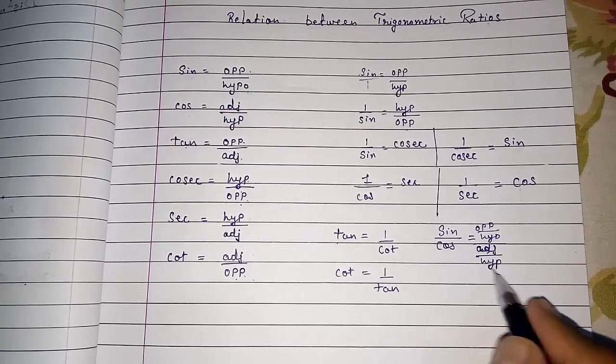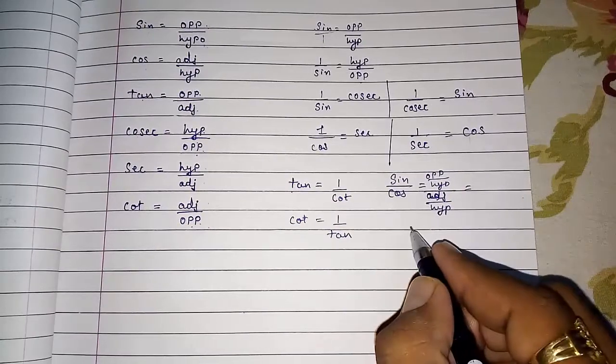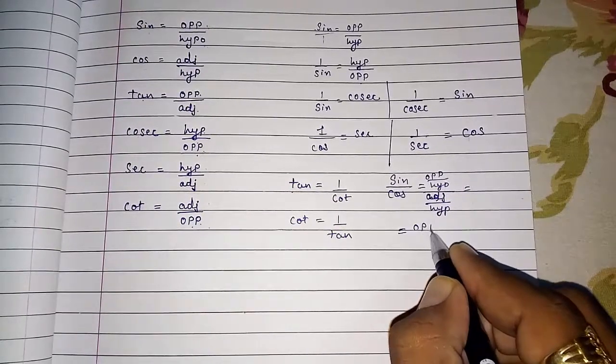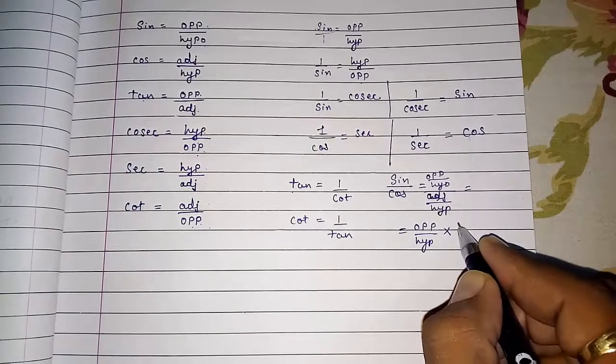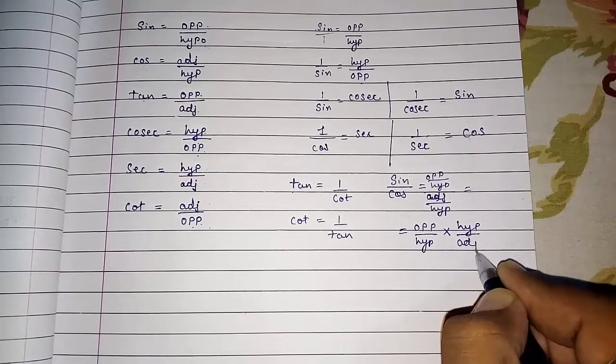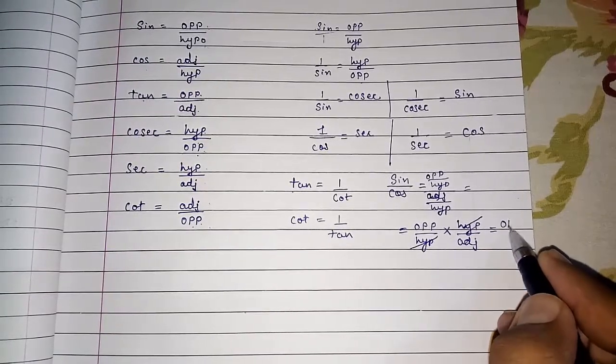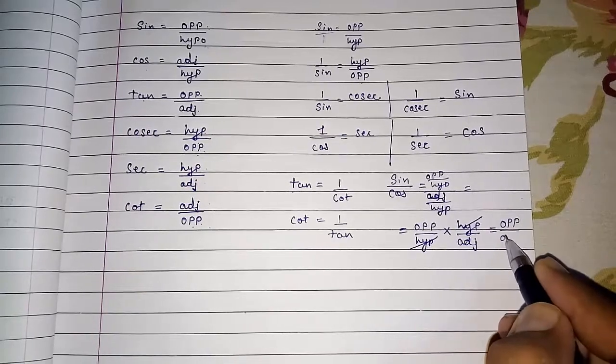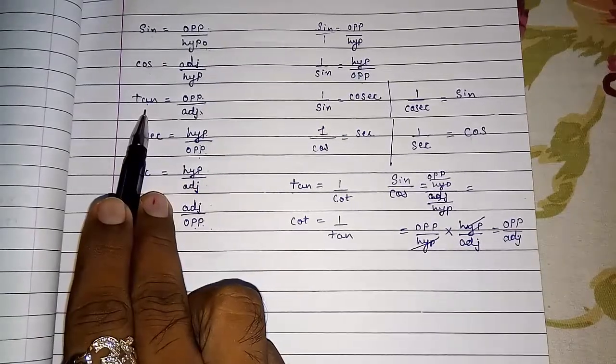If I divide I will have to reciprocal it. Means if I do reciprocal it will be opposite upon hypotenuse into this will go in the numerator, hypotenuse by adjacent. Here we can see it will get cancelled and I will get opposite by adjacent. And we know opposite by adjacent is tan.